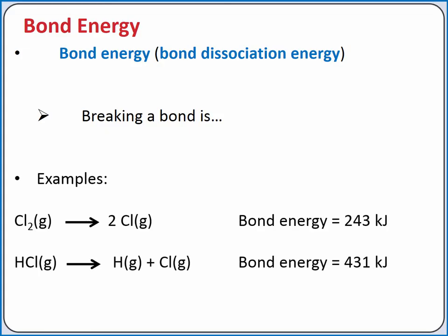We can represent the process of breaking a bond as shown. For example, the energy required to break a single bond between the two chlorine atoms in Cl2 gas is 243 kJ per mole.